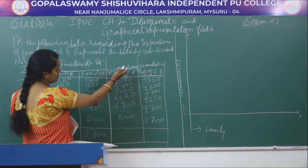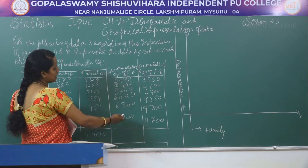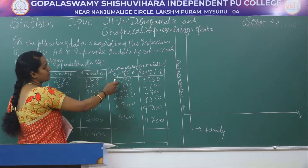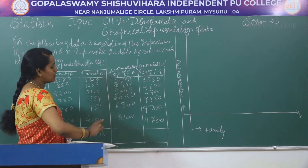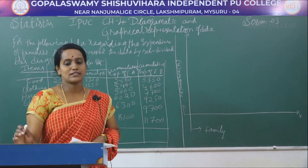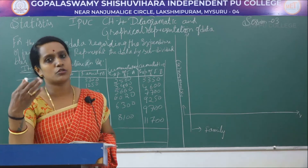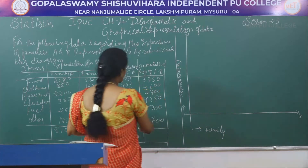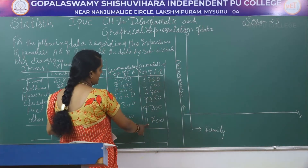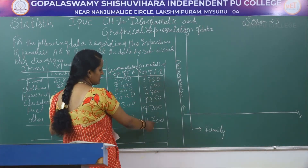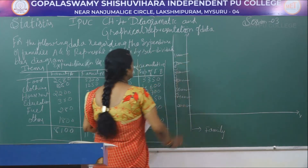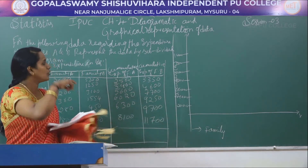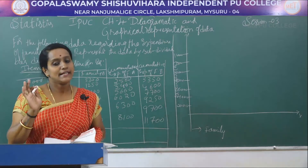In the y-axis I should take the scale. The values of expenditure are in thousands. The minimum cumulative value is 2,580 and the maximum is 8,100 for family A, but for family B it is 11,700. So our maximum value is 11,700. I will start the y-axis from 0, then 2,000; 4,000; 6,000; 8,000; 10,000; up to 14,000.